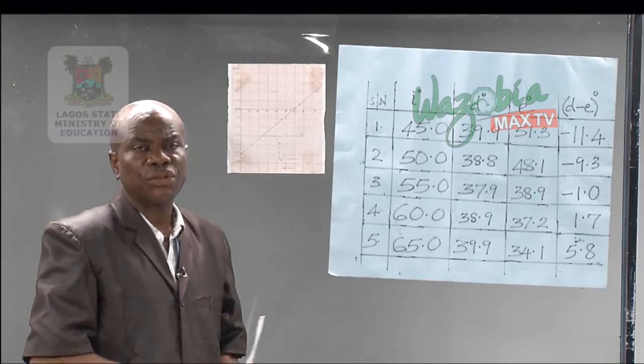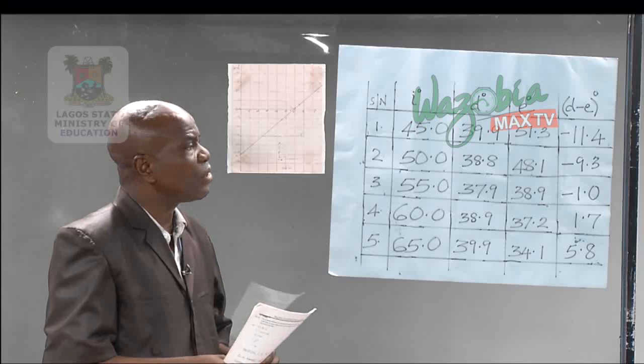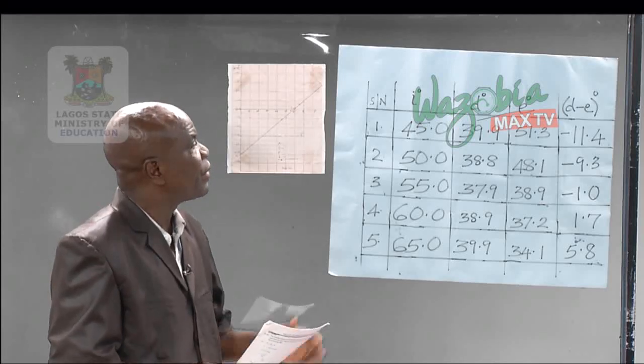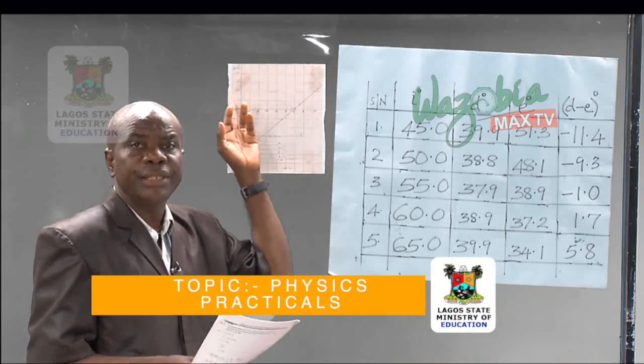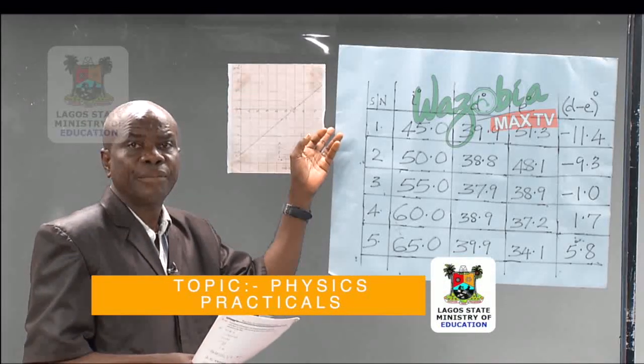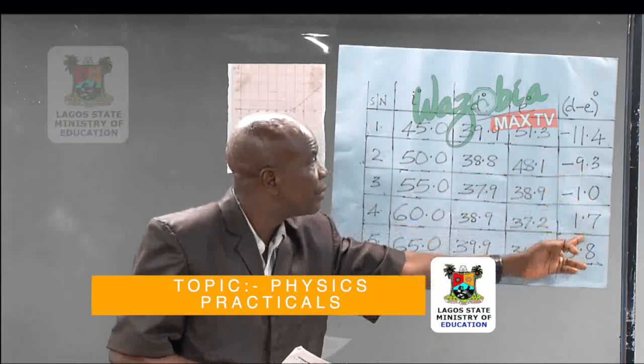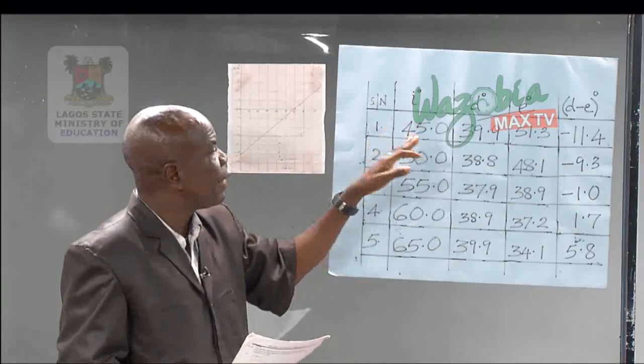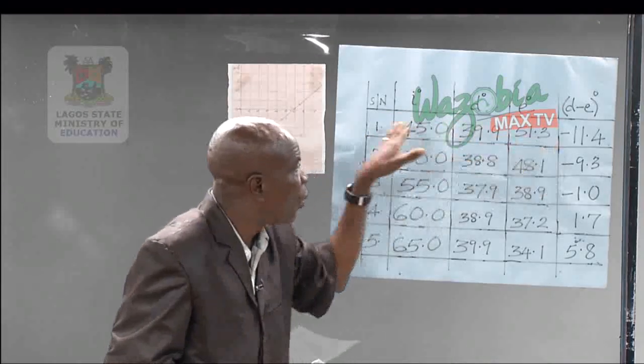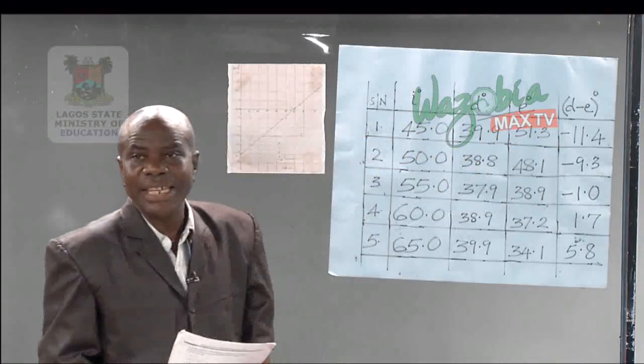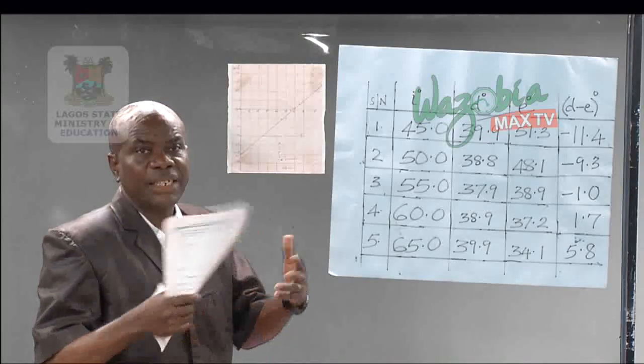The next thing we look at is what we refer to as gross errors. This should also be avoided. For example, what I have on the board there, you have to plot a graph of D minus E against I. And I have the values here. This is D minus E, this is I. If a candidate plots exactly the way it is done without getting a scale, we have what you call gross errors.